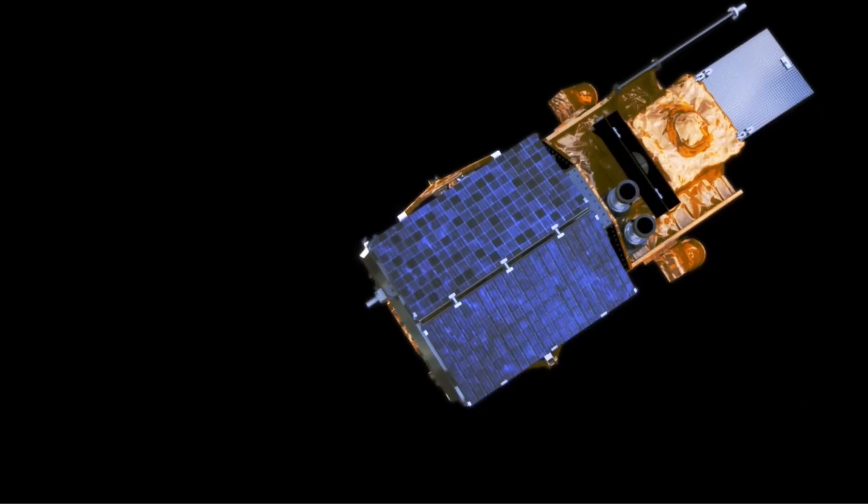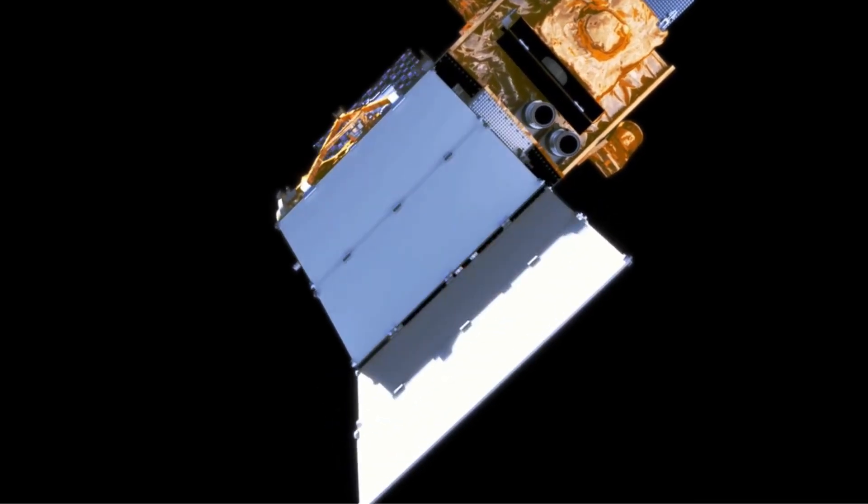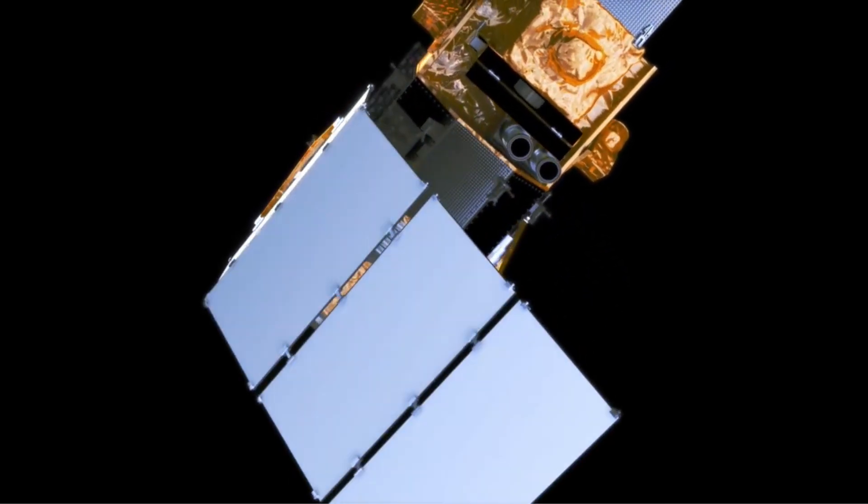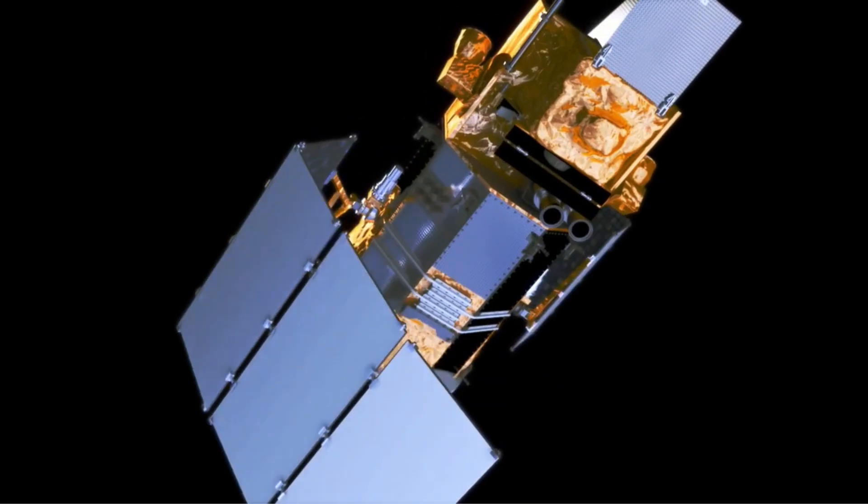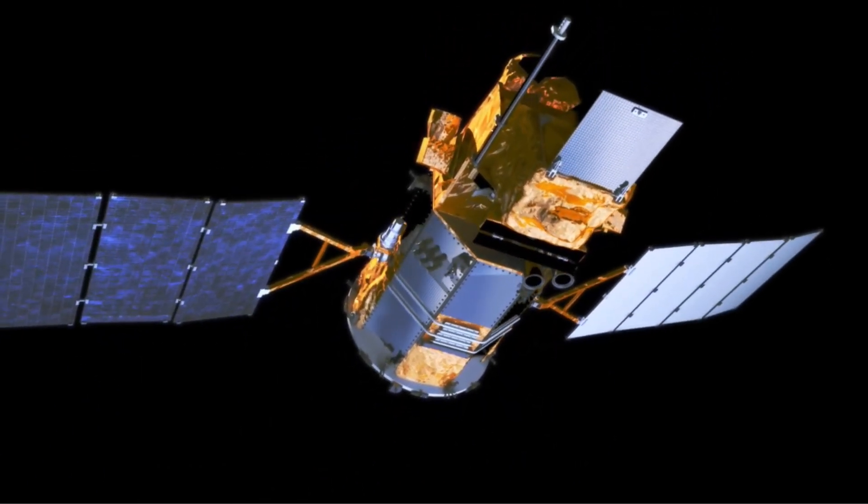The unique properties of shape memory polymers open up a wide range of applications across various fields. In aerospace, they make it possible to create shape-changing wings and deployable structures, like satellites and space habitats used in space missions.